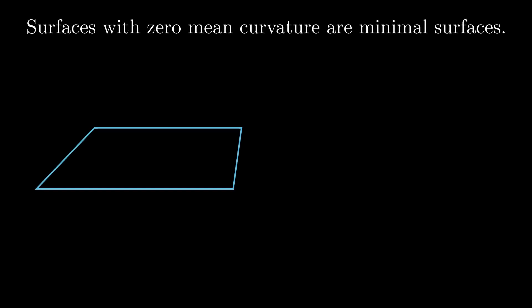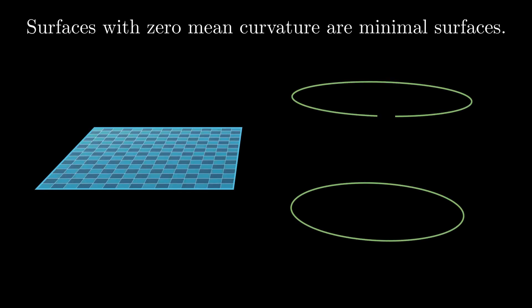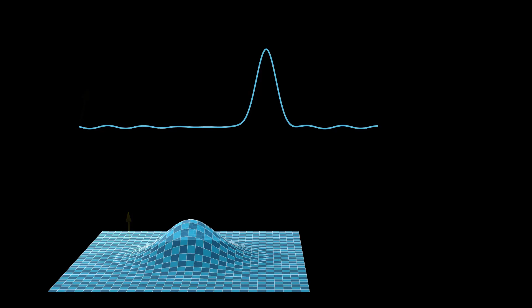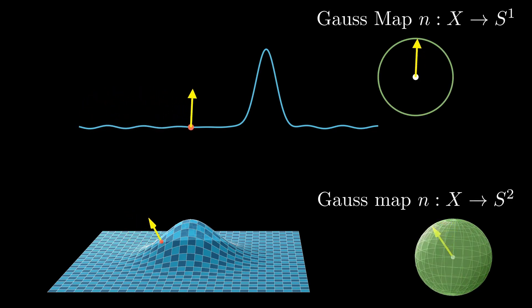Surfaces with 0 mean curvature are minimal surfaces; they minimize area for a given boundary. Now that we have an intuitive understanding of curvature for plane curves and surfaces, let's look at how to formalize this idea mathematically. Both plane curves and surfaces can be studied using the same tools. For sufficiently smooth plane curves and surfaces, we can define a unit normal vector at each point. The function that assigns a unit normal vector to each point is called the Gauss map, which maps the curve or surface to the unit circle or unit sphere.